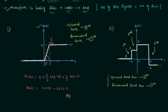We start from the left side of the signal. Initially x(t) is equal to 0. At t equal to −2 the level switches upward, so we take a positive sign. The new level is 3 and the old level was 0, so the difference is 3. The step signal is u(t + 2) because the switching occurs at t equal to −2. We are done with the first discontinuity.